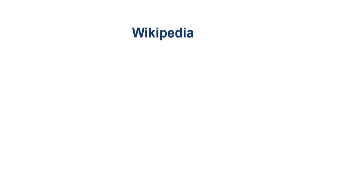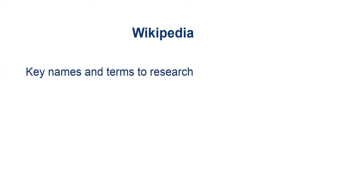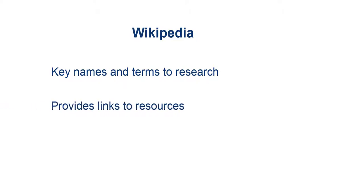Wikipedia is a great place to start research, especially in popular culture or current affairs. Wikipedia can give you key terms and names to research and provides links to resources, but Wikipedia is not an appropriate source to cite in a research paper. While reading background information, you'll want to jot down key terms and names that you can search when finding books and articles on your topic.